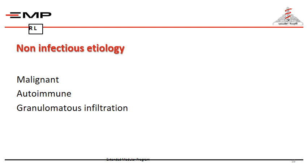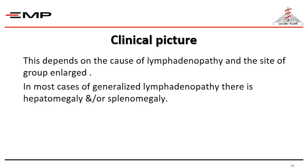As regards non-infectious etiology of regional lymphadenopathy, it may be malignant, or due to malignancy in the organ drained by that group of lymph nodes, autoimmune disease, or granulomatous infiltration. The clinical picture depends on the cause of lymphadenopathy and the site of the enlarged group. In most cases of generalized lymphadenopathy, there is hepatomegaly and/or splenomegaly.